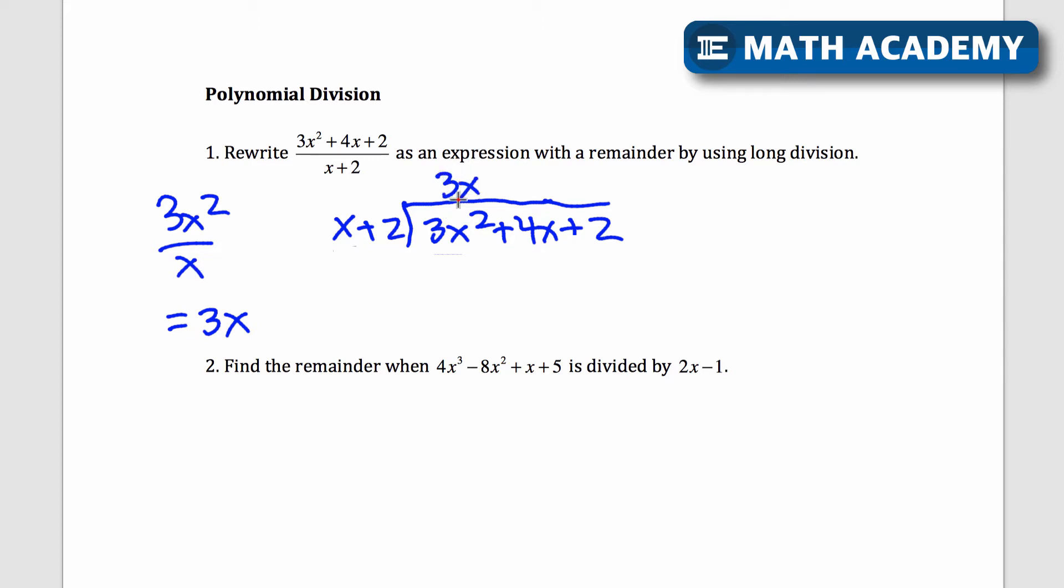I'll write 3x up here. Now I'm going to multiply 3x by all of this and put it underneath. 3x times x is 3x squared, 3x times 2 will be plus 6x. And now I'm going to subtract all of this. If you remember doing long division, that's very similar. You multiply what you get up here by this, put it down below and you'll subtract it.